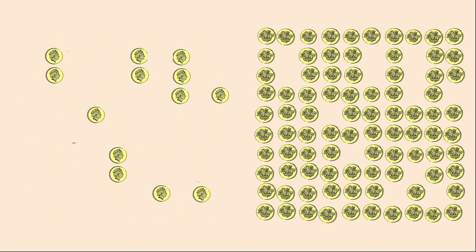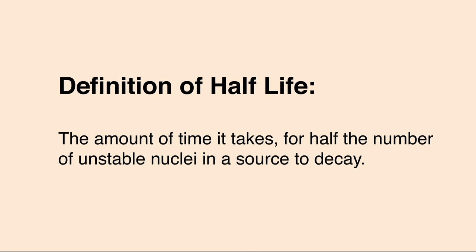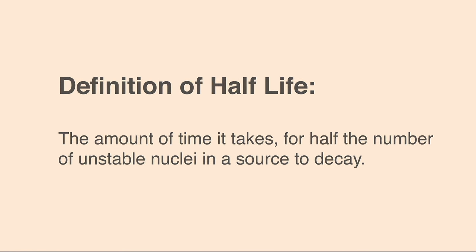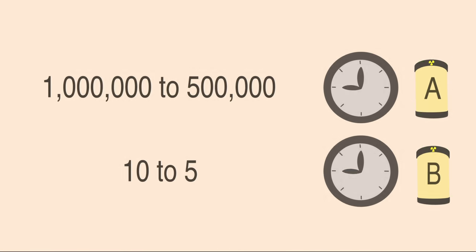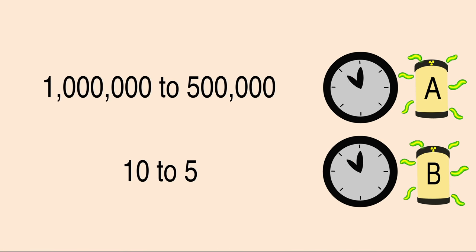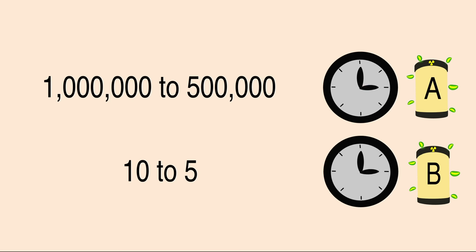This is exactly how it works with radioactive nuclei. We actually define the half-life as the amount of time it takes for half the number of unstable nuclei in a source to decay. That could be down from a million to 500,000, or it could be down from 10 to 5 — it would still take the same amount of time for the same source.